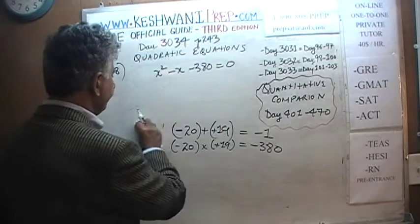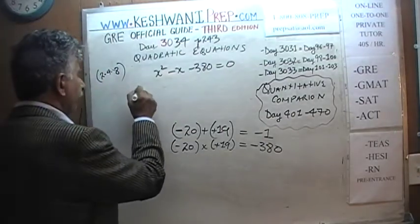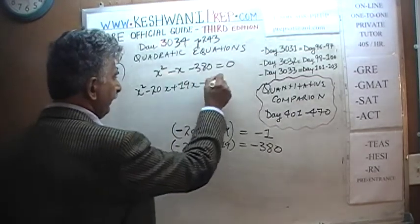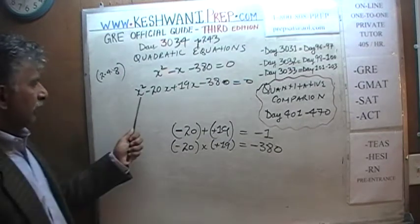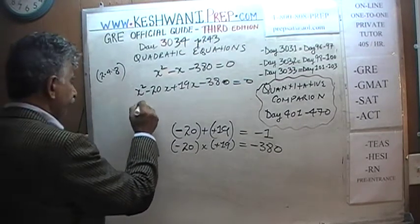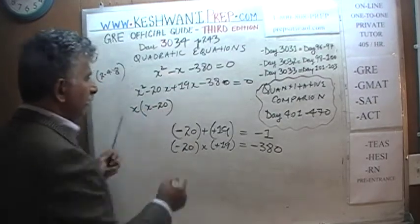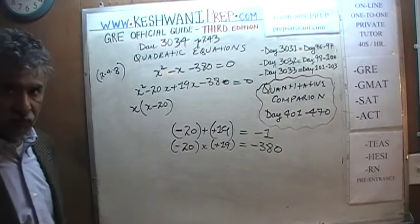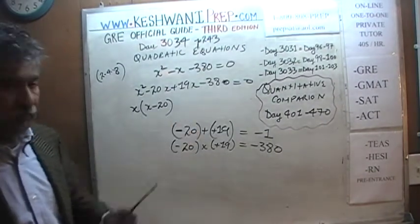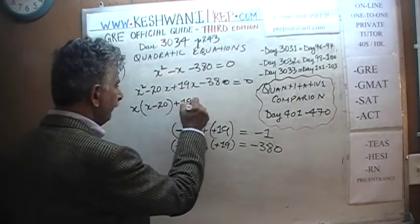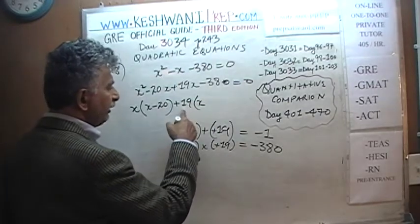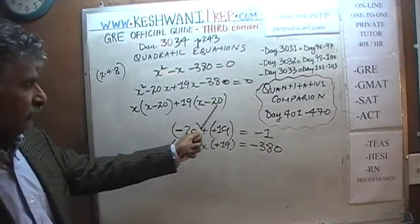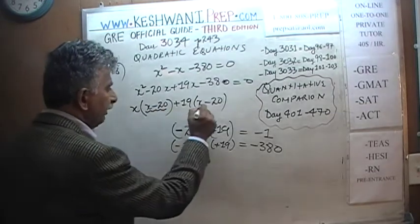So negative 20 and positive 19 — let's continue. We write x² − x as negative 20x plus positive 19x, and minus 380 equals 0. The common factor between the first two terms is x; after taking out x we're left with x − 20. The common factor between the last two terms is 19; after taking out 19 from 19x we get x, and negative 380 ÷ positive 19 = negative 20. So we have a common factor of x − 20.